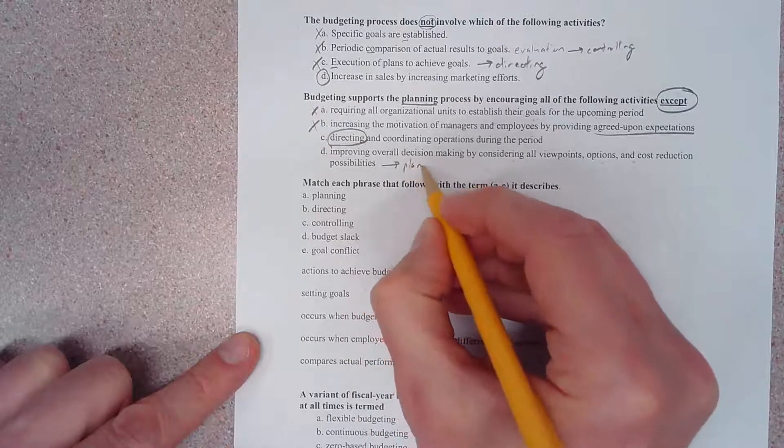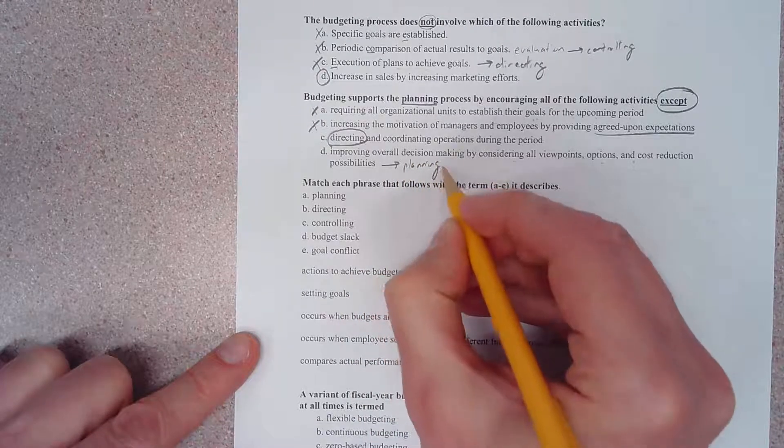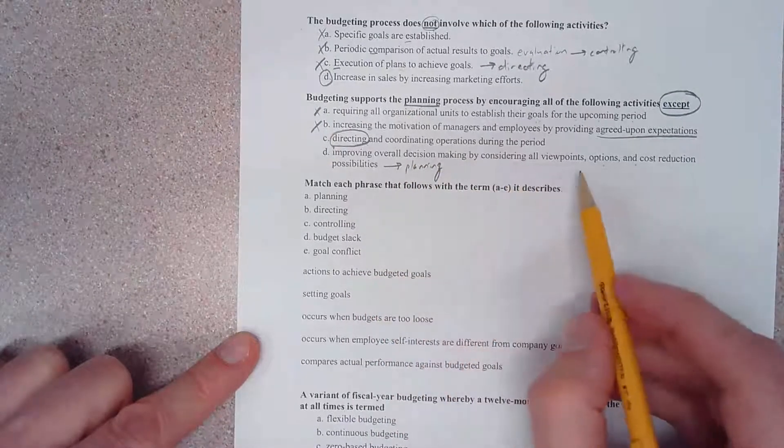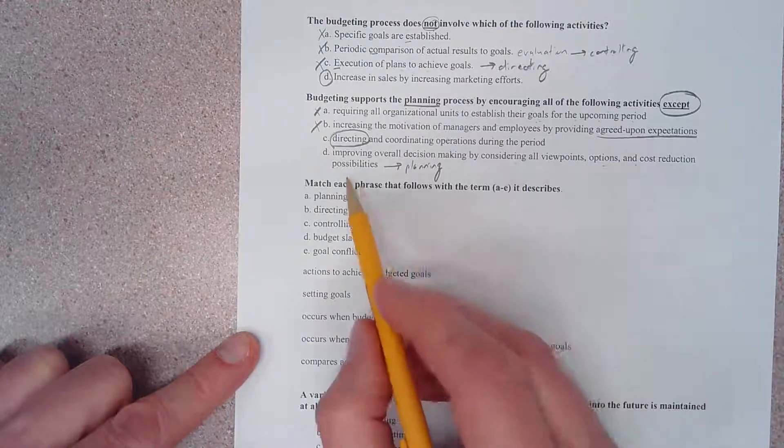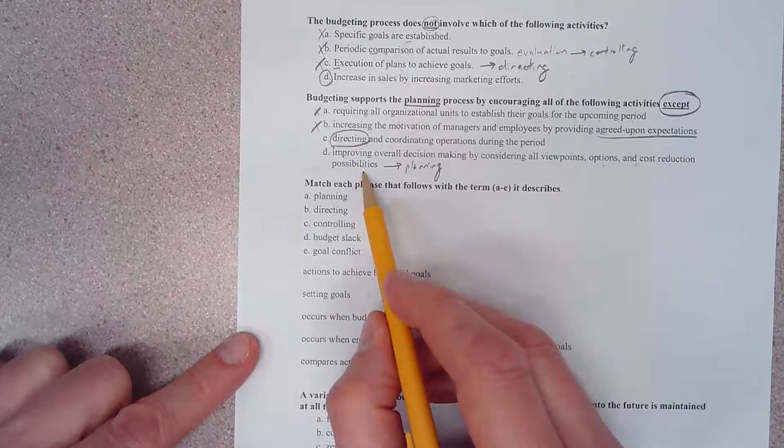Choice D says improving overall decision making by considering all viewpoints, options, and cost reduction possibilities. This is absolutely a part of the planning process because what we're doing here is doing all of these things to help establish goals.